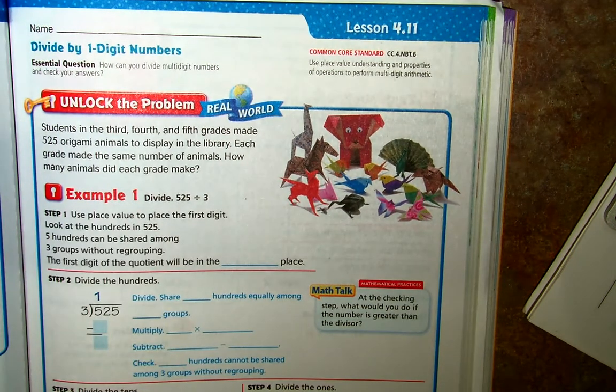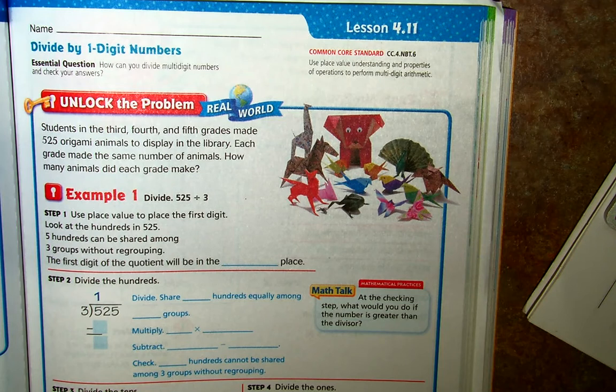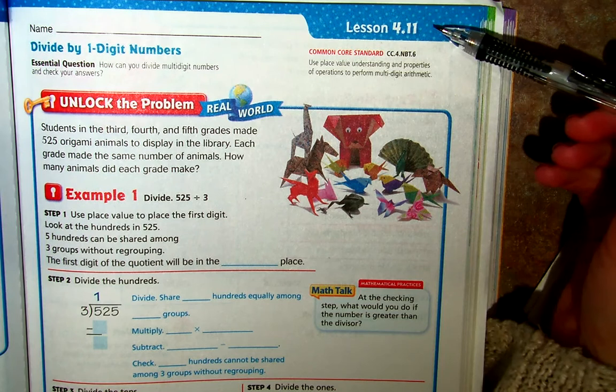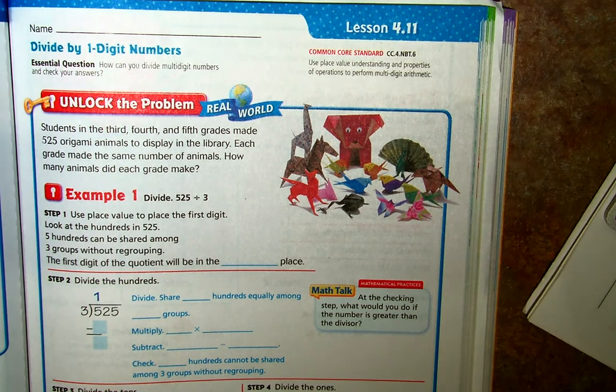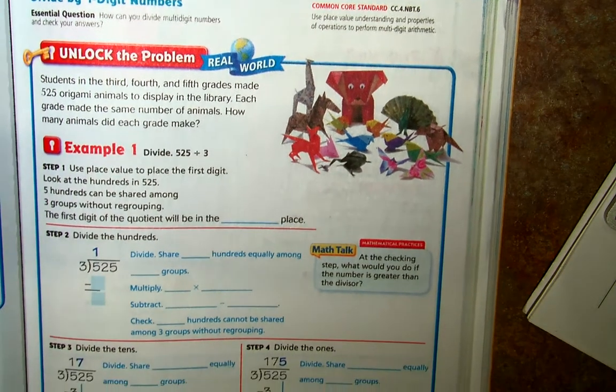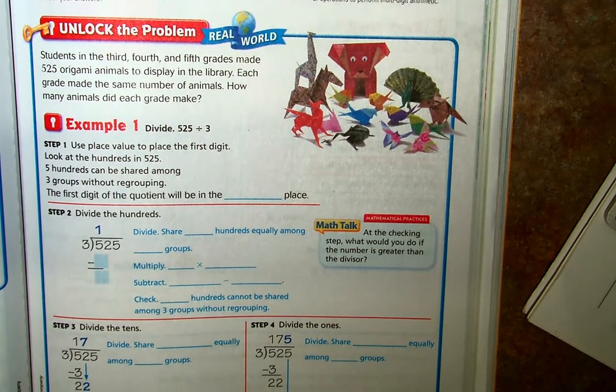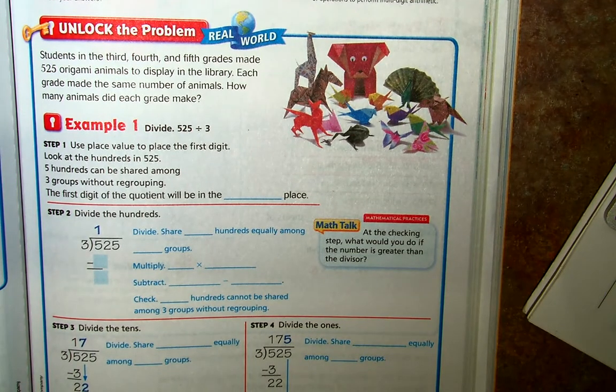So, we're going to walk through page 179 in your textbook. Again, this is lesson 4.11, and we're going to begin with the first problem that says unlock the problem, and this is a real world or considered a real world problem.